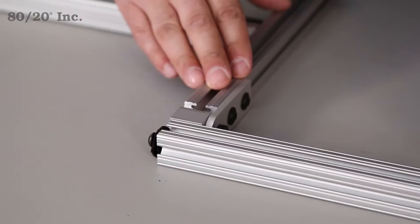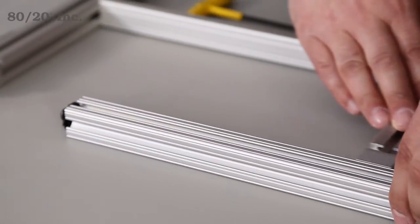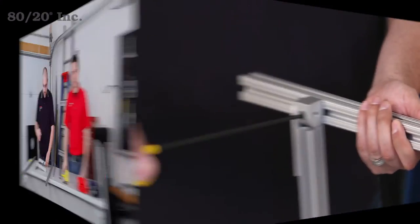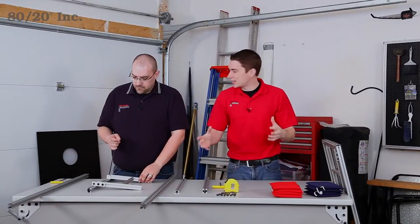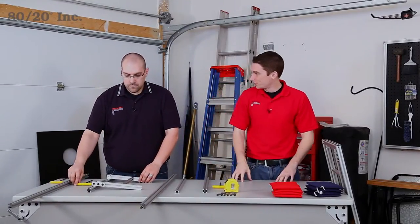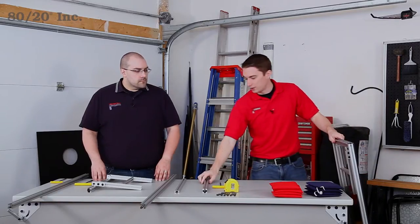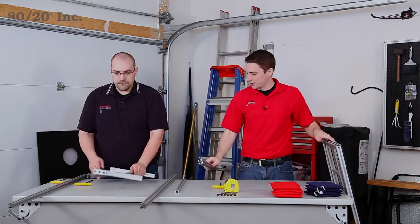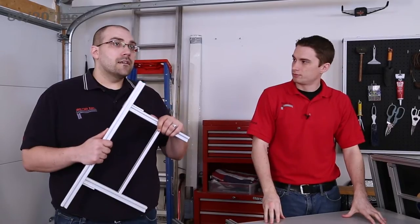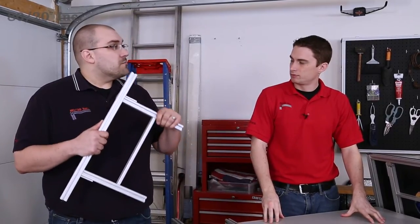Now that we have the legs in place and tightened down, we're ready to start the frame. We're going to start at the legs and work our way forward on the board. We'll simply grab our profiles and slide them into place and tighten them down with our end fasteners. The great thing about the end fasteners is that they create a nice clean hidden connection and they're one of 8020's most popular fastening options.